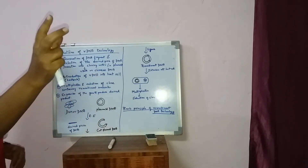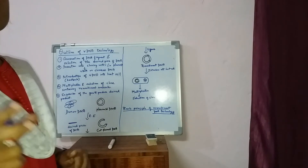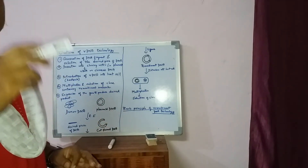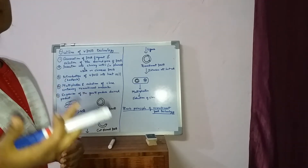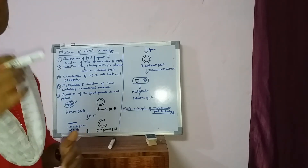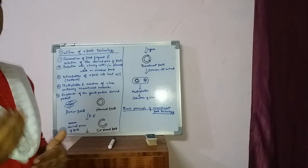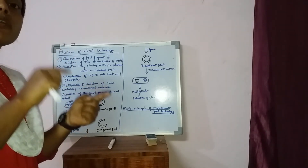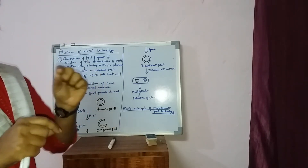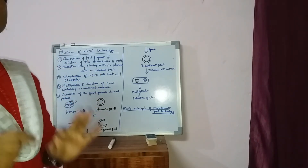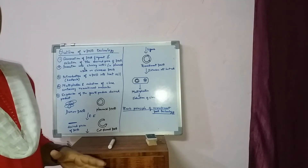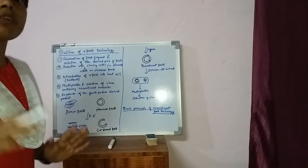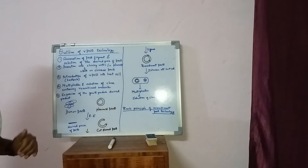The next step is we introduce this recombinant DNA into the host cell, for example E. coli, and then we cultivate that particular E. coli on the nutrient medium. When this E. coli multiplies and grows, our recombinant protein will also be expressed. The next step will be selection of that recombinant DNA and finally extraction of that particular protein of interest or DNA of interest.